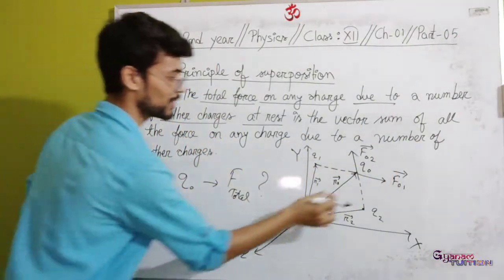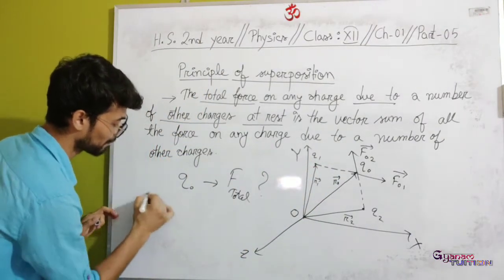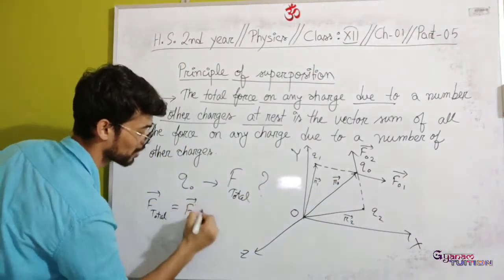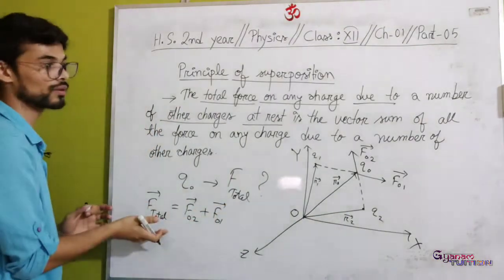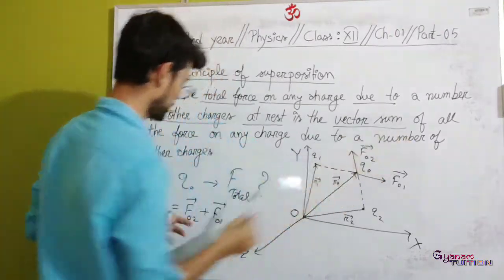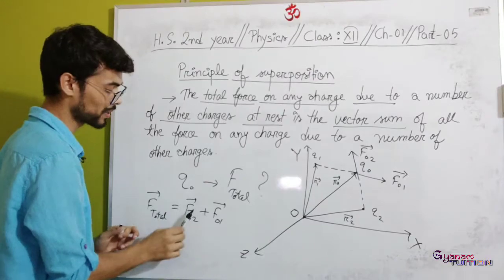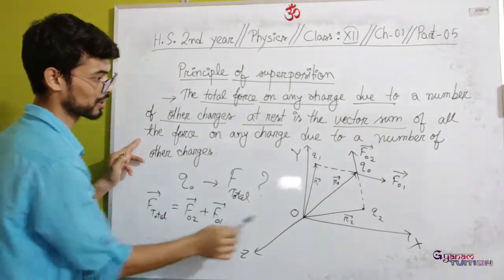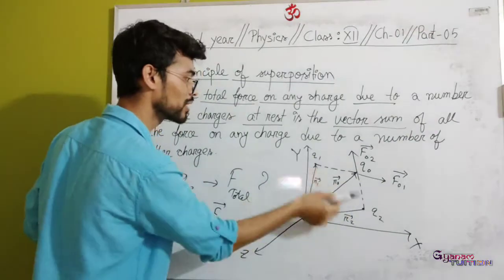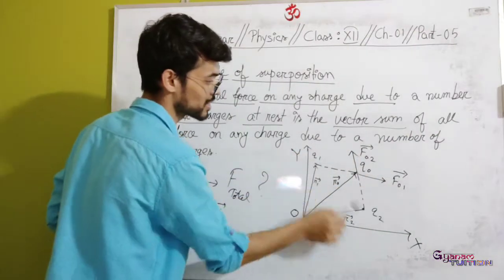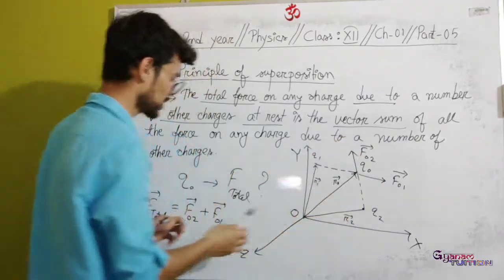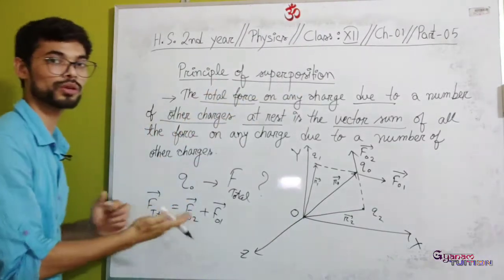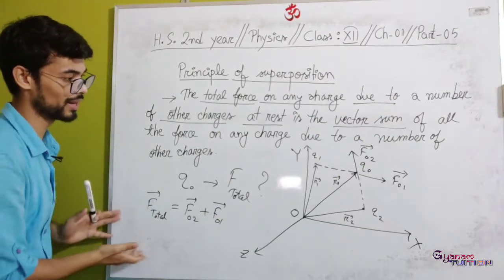The total force is the vector sum of all the forces on any charge due to a number of other charges. So the total force on Q0 — for example, F02 plus F01 — is equal to the vector sum of all the forces. This is the principle of superposition.